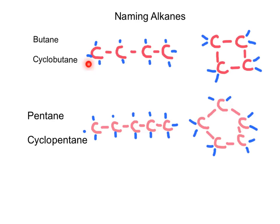Names of alkanes and cycloalkanes are the root names for organic compounds. The number of carbons for cyclic ones is designated by the same prefix as a linear alkane, but preceded by the word cyclo. For example, a four-carbon ring is still a butane, but now we place the word cyclo in front: cyclobutane.